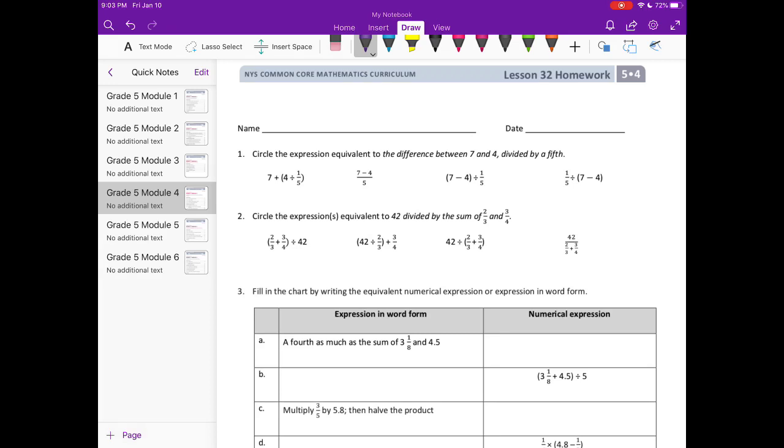Lesson 32 homework. Number one, circle the expression equivalent to the difference between 7 and 4 divided by 1 5th. So we're looking for one expression that's equivalent to the difference. Now difference means we're subtracting. So we're looking for the difference between 7 and 4.